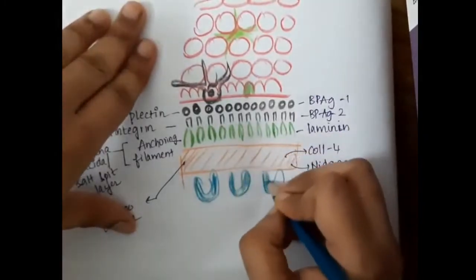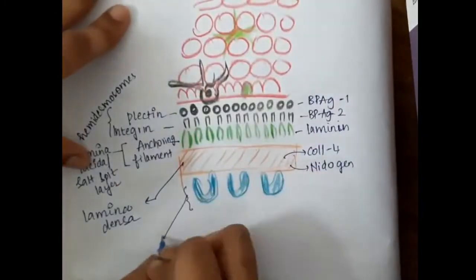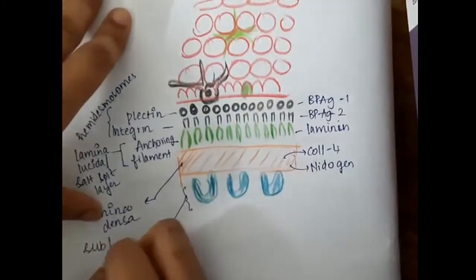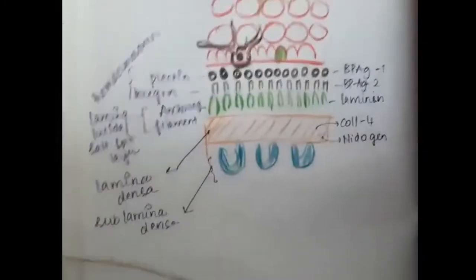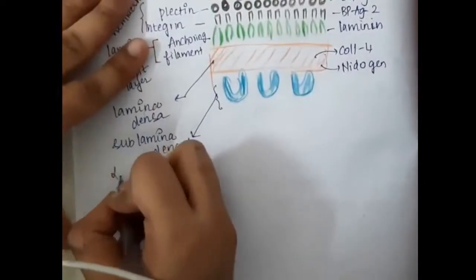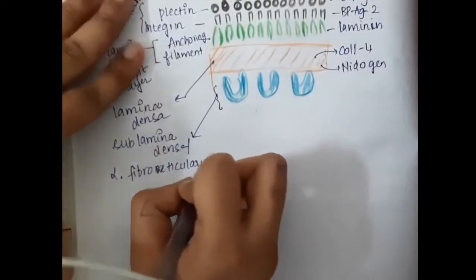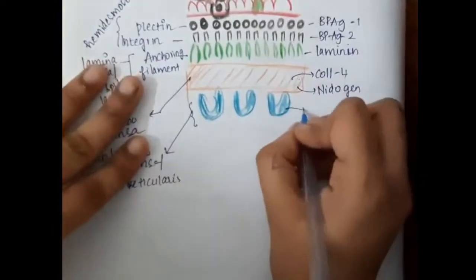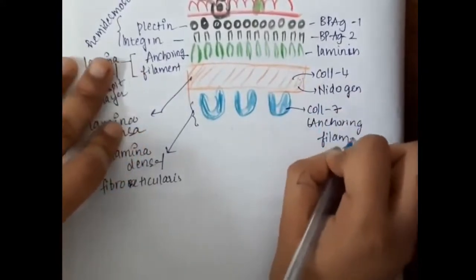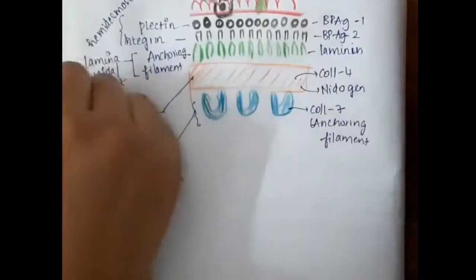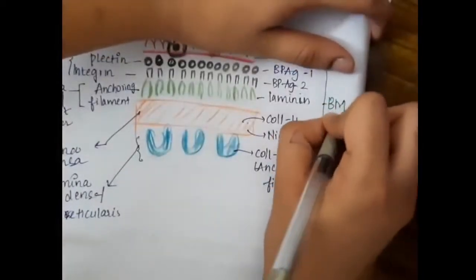Below the lamina densa we have the sub lamina densa, as the name says. This is also called the lamina fibro reticularis. The sub lamina densa or lamina fibro reticularis contains collagen 4 and collagen 7, also called anchoring fibrils.